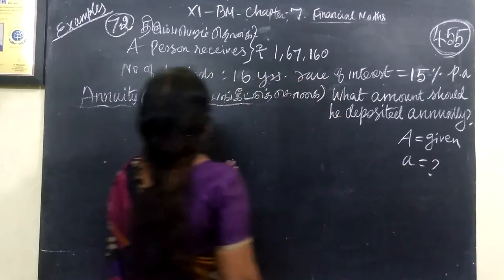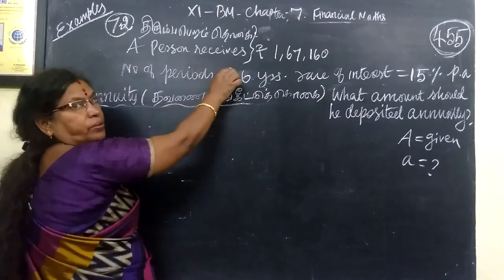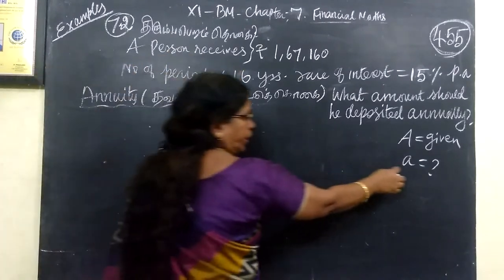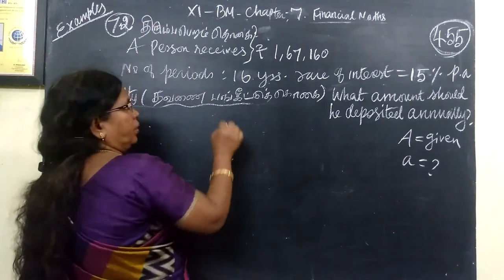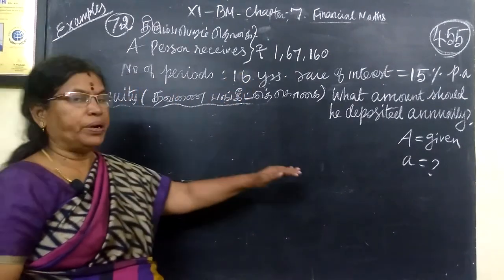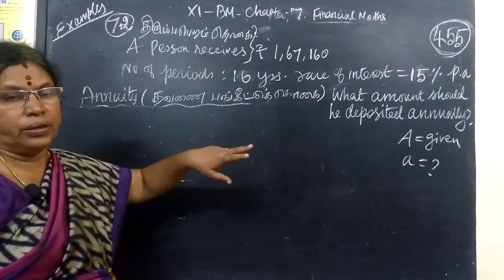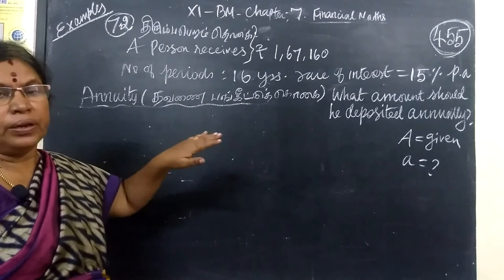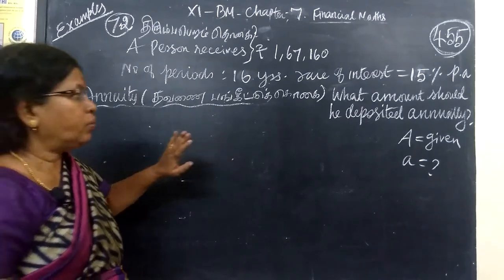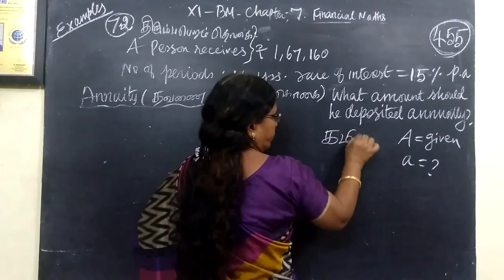If you want to find small a, a person receives, he is paying some amount a every year for 16 years. If you want to find small a, a by a, this is the clue word, you will need to find small a.